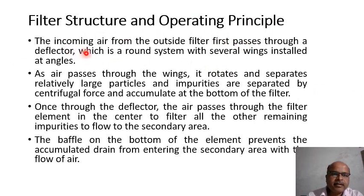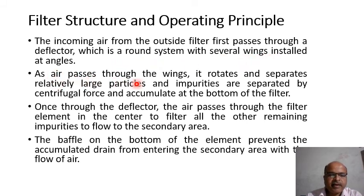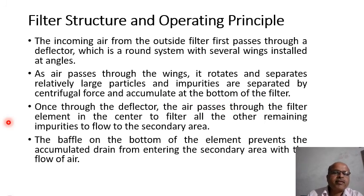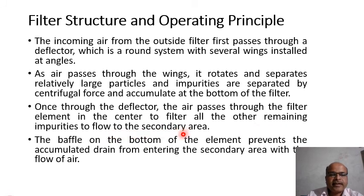Filter structure and operating principle: The incoming air first passes through a deflector, which is a round system with several wings installed at an angle. As the air passes through the wings it rotates, separating relatively large particles by centrifugal force, which accumulate at the bottom. The air then passes through the filter element in the center, and the baffle at the bottom prevents accumulated drain from entering the secondary area with the flow of air.